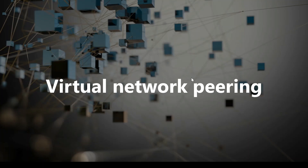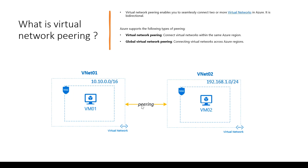In this video I'll talk about virtual network peering. Whenever two independent virtual networks seamlessly connect and talk to each other, we call that process virtual network peering. Azure supports two types: virtual network peering when you are in the same region, and global network peering when the regions are different.